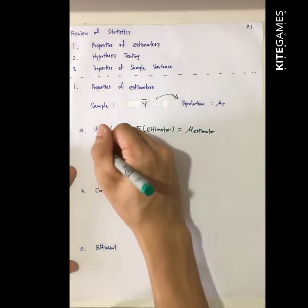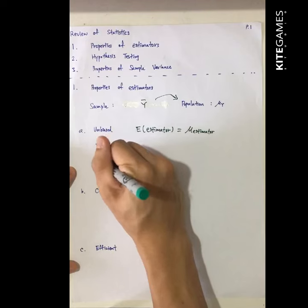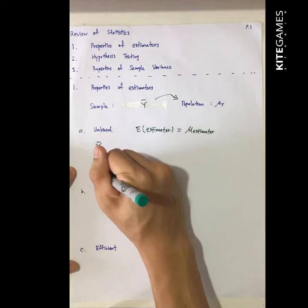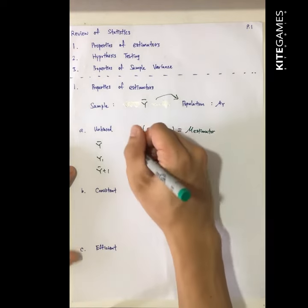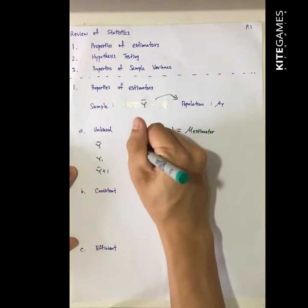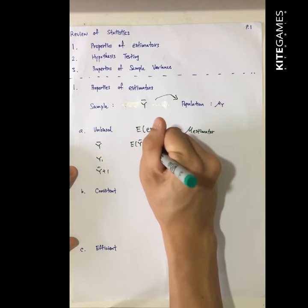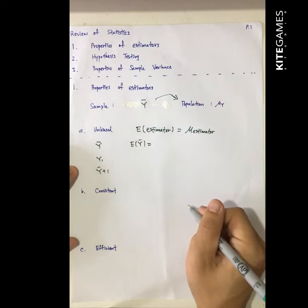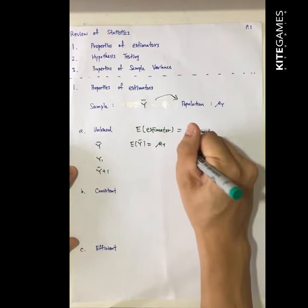Unbiased means that the expected value of the estimator is equal to the mu of the estimator. For example, you have three estimators: Y-bar, Y1, and Y-bar plus one. Whether they are unbiased or not, you can check. The expected value of Y-bar is just equal to mu-Y, so this is unbiased.